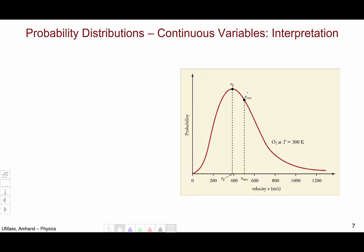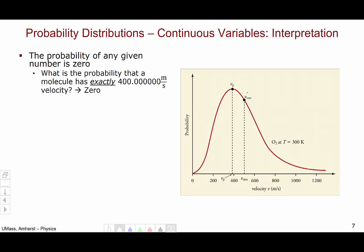So let's think about how to interpret probability distributions of continuous variables. The probability of any given number is actually zero. To understand this, think about what is the probability that a molecule bouncing around the room you are sitting in has exactly 400 meters per second worth of velocity. I mean 400 meters per second to an infinitely high level of precision. Zero. It will always deviate from 400 by a little bit.